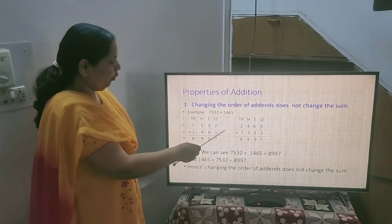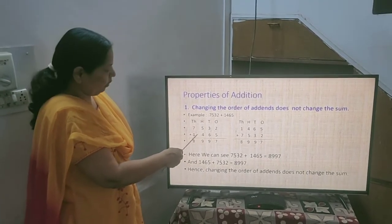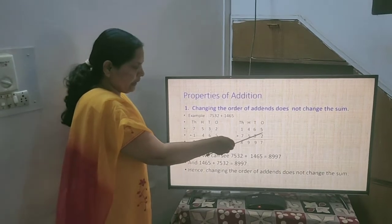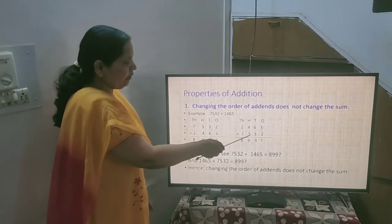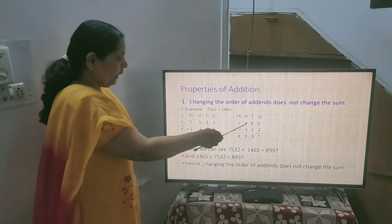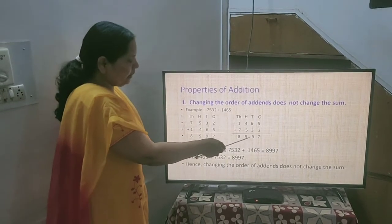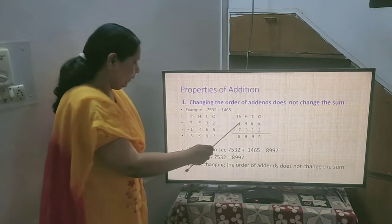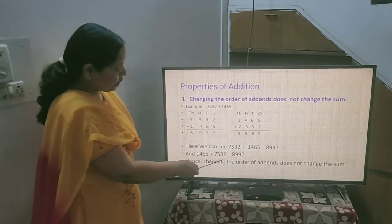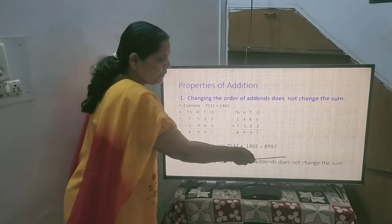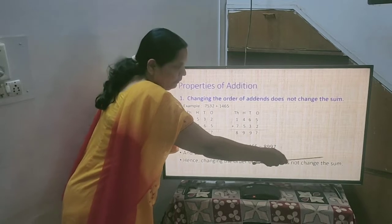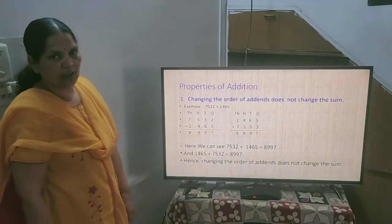In the second time we have changed their order. 1,465 is taken first and then 7,532 is written. Again total is same, 8,997. It means changing the order of the addends does not change the sum. This is the 1st property of addition.